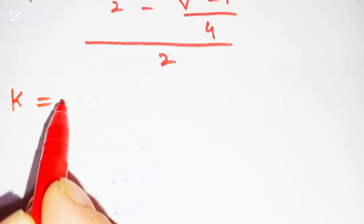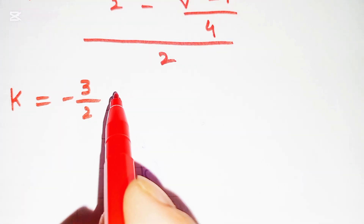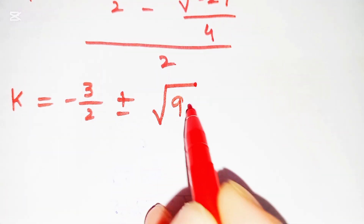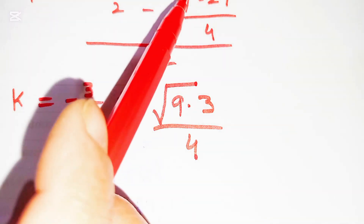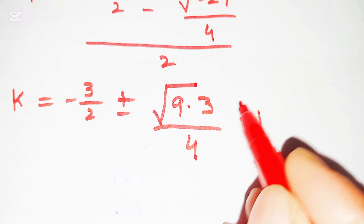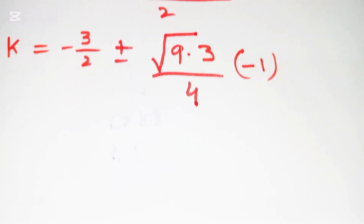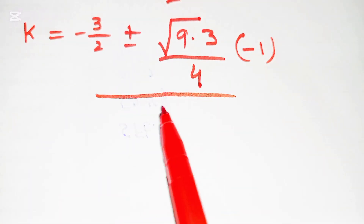We rewrite √(−27/4) as √(9·3/(4)) with √(−1) = i, so k = (−3/2 ± √(−27/4)) / 2.